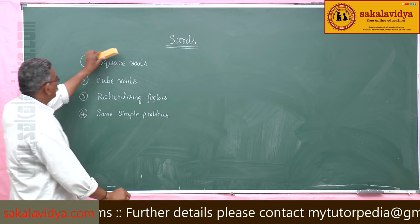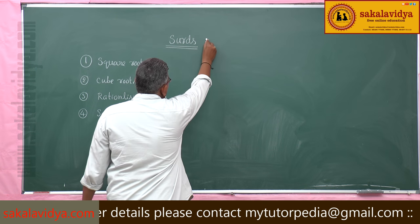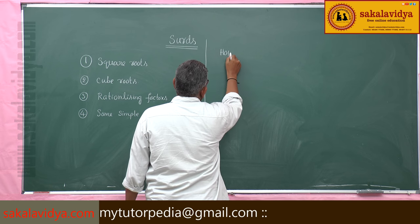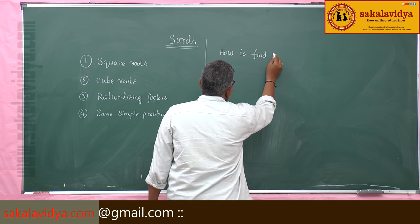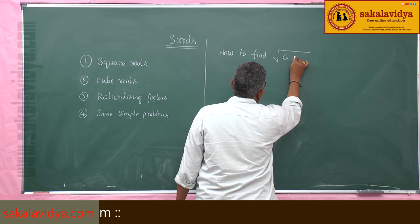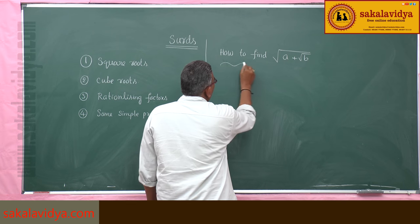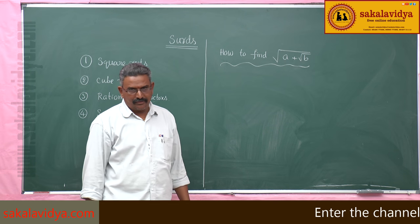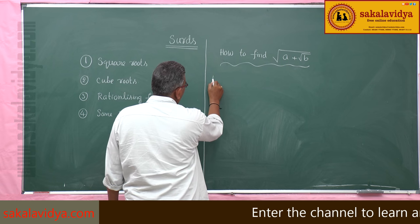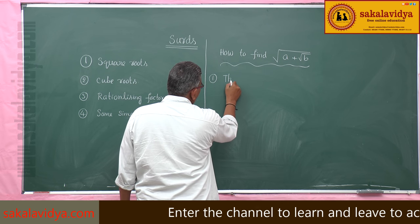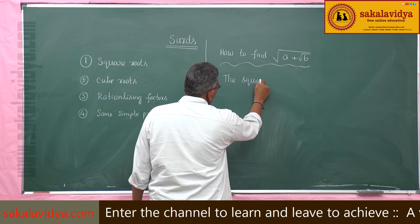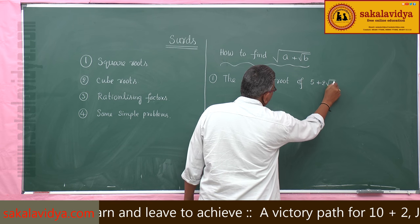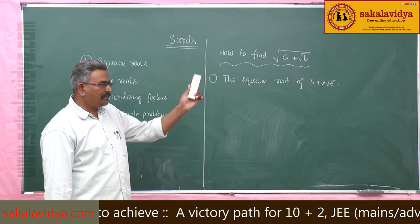Now let us discuss square roots first. How to find the square root of a (a + √b) form? We know that a + √b is a binomial surd — the square root of a binomial surd. Let us take one example directly: find the square root of 5 + 2√6.